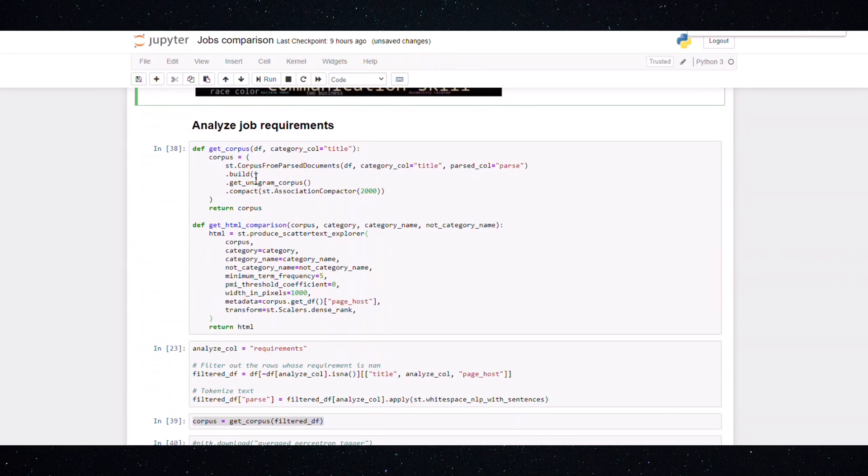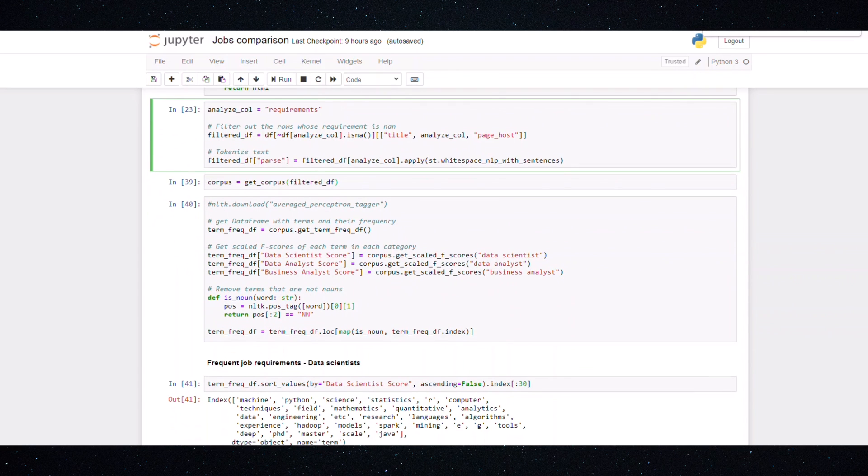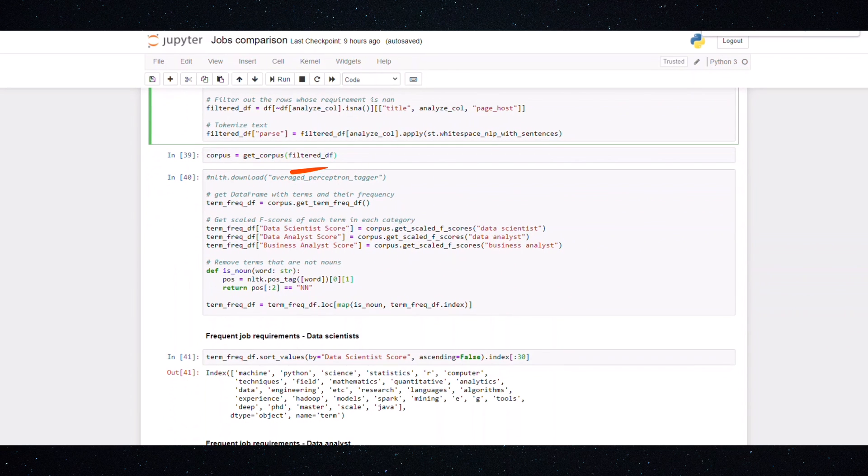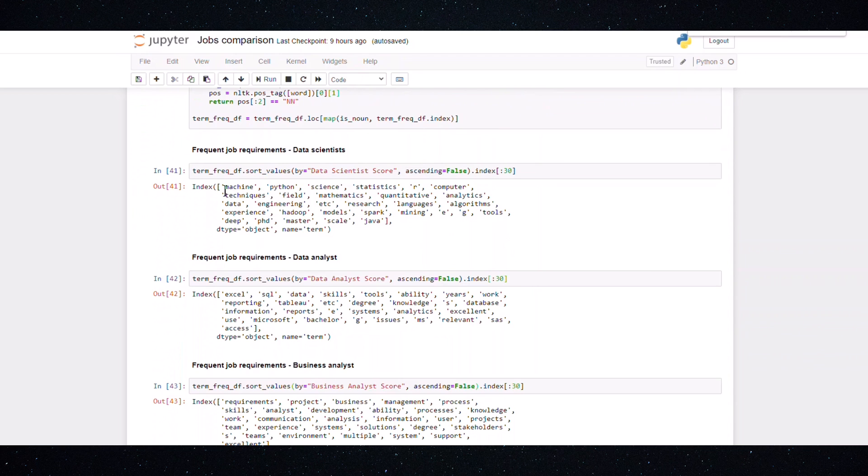The next thing we want to do is to analyze the job requirements. Since we have a column called requirements in our datasets that contains the text for all the requirements of each job, what I did was to extract those words and put them into a corpus. Now if we print out the frequent terms in the job descriptions and job requirements.